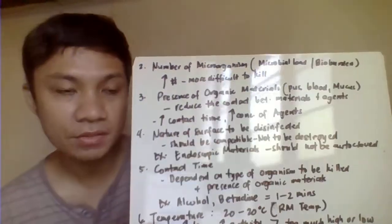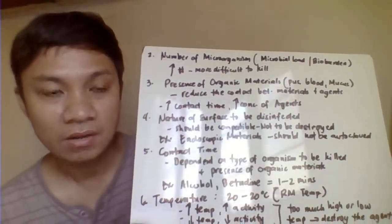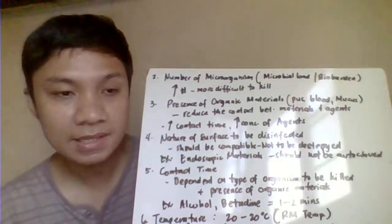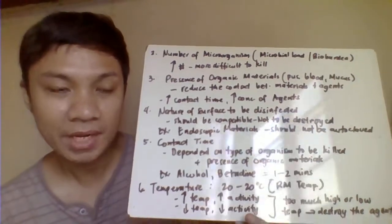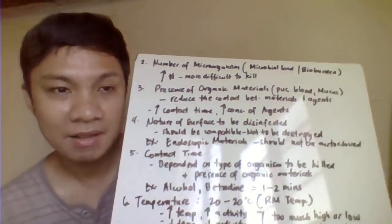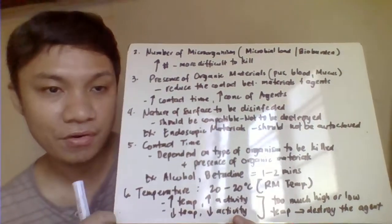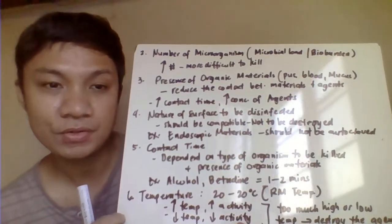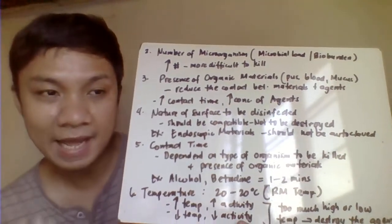Another factor that determines the degree of the killing process is the number of microorganisms — called the bioburden or microbial load. The more microorganisms present, the harder they are to kill. When bioburden is high, you need to increase the concentration of your agent or increase the contact time — the time during which the agent is exposed to the material.